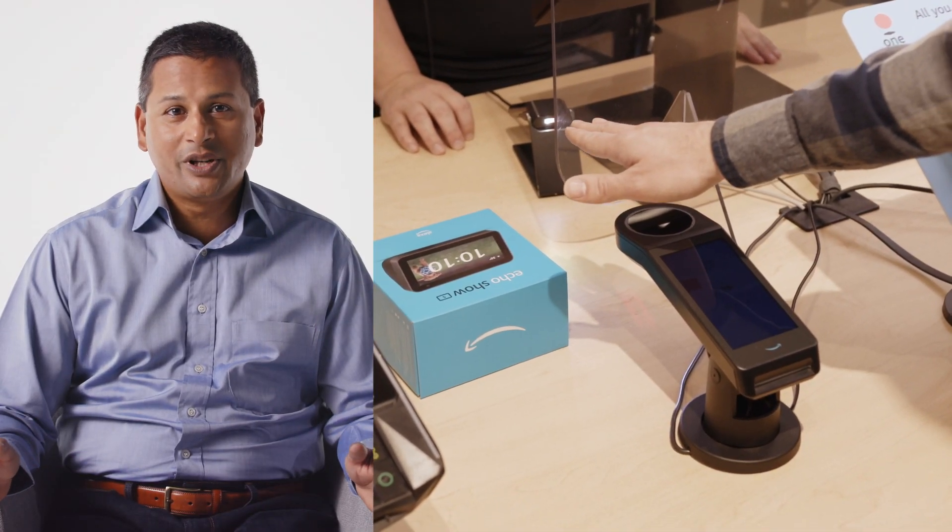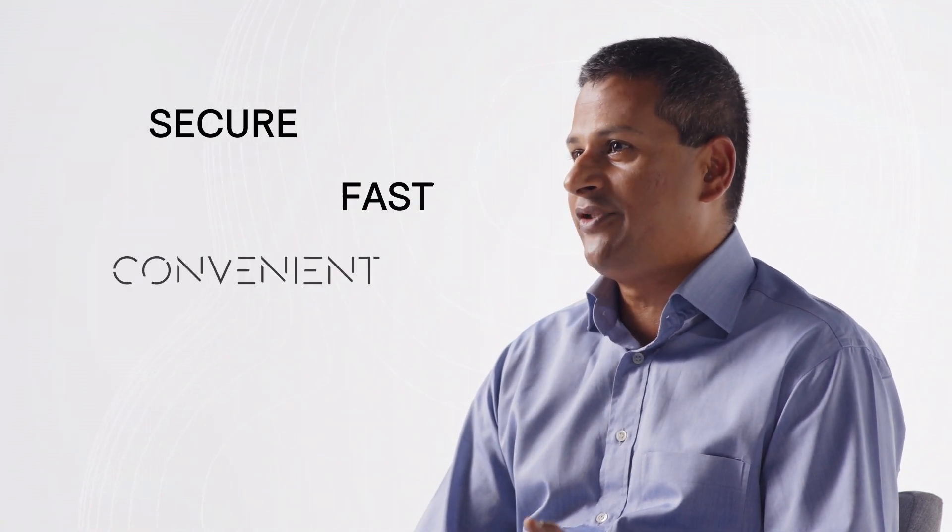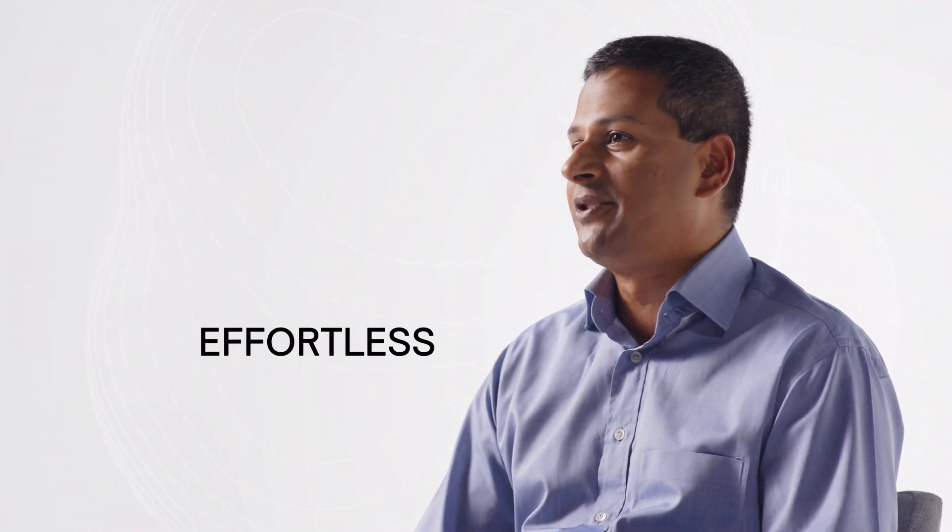Customers have loved the experience. They've loved how simple and easy it is to use and it saves them time when they're waiting in line. There's many different ways in a physical environment where one has to stop, one has to identify themselves, one has to pay either for loyalty or for paying your bills, whatever those cases might be. Amazon One is uniquely positioned to be the way that customers identify, enter, or pay in a variety of different environments which is secure, it is fast, it's convenient, and it's effortless for customers.